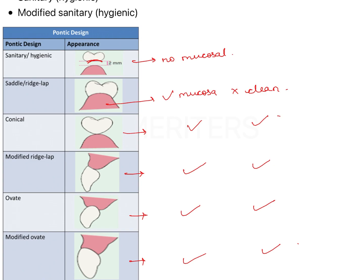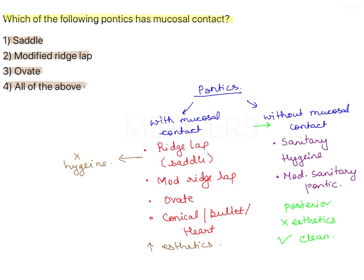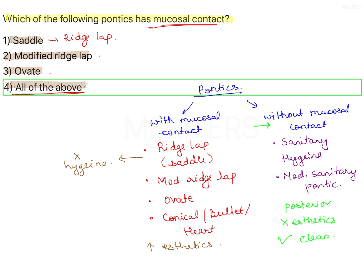Looking at the options: saddle, which is ridgelap; modified ridgelap; and ovate — all of them have mucosal contact. So the correct answer is option 4, all of the above.